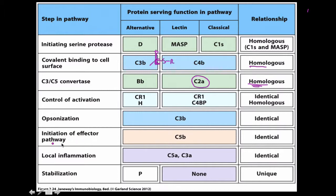Initiation of the effector pathway — that is, initiation of the membrane attack complex — is C5β. Local inflammation involves C5α and C3α, which are both anaphylatoxins; you could also include C4α to be specific. Stabilization is by properdin, also called Factor P, which protects and shields the C3 convertases from degradation. The other two pathways don't really have that — it's unique to the alternative pathway.